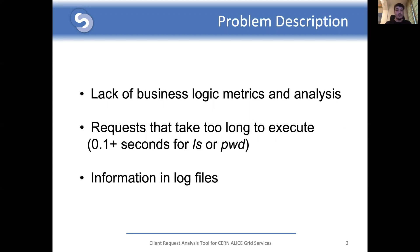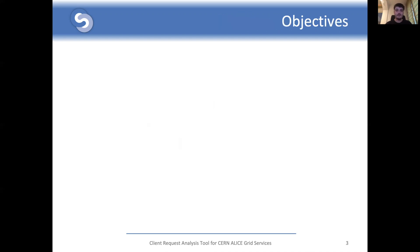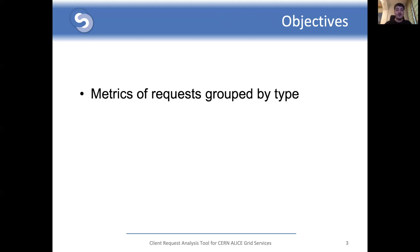Also, all this useful request information is stored only in log files without being analyzed further. This means that in order to debug a request, usually a search in those log files was required. Based on the shortcomings identified earlier, the main objectives of the analysis tool are to categorize various types of requests by various metrics like frequency, duration, or sites.